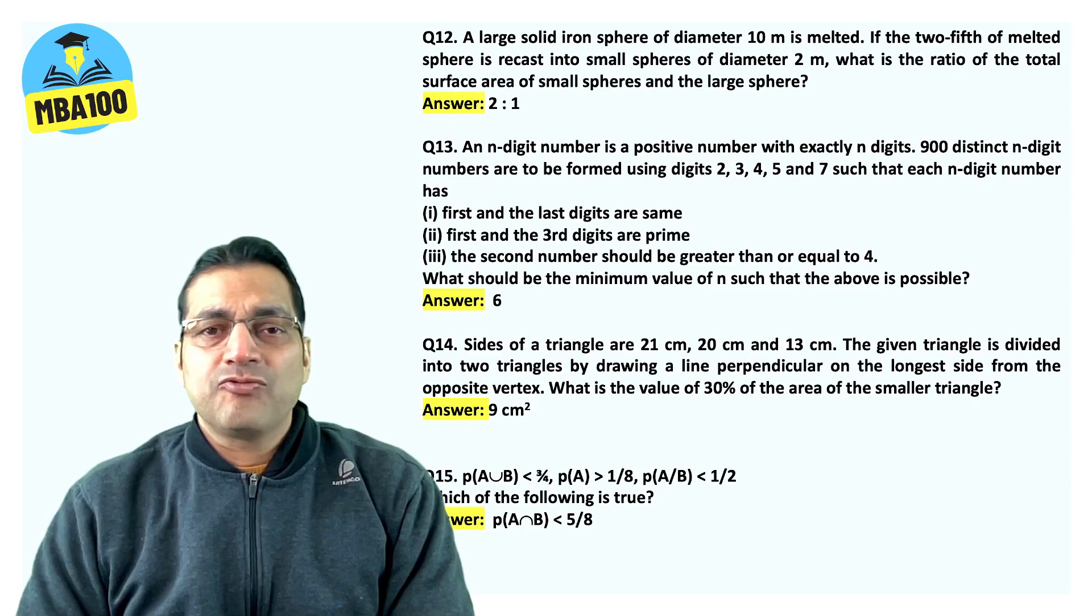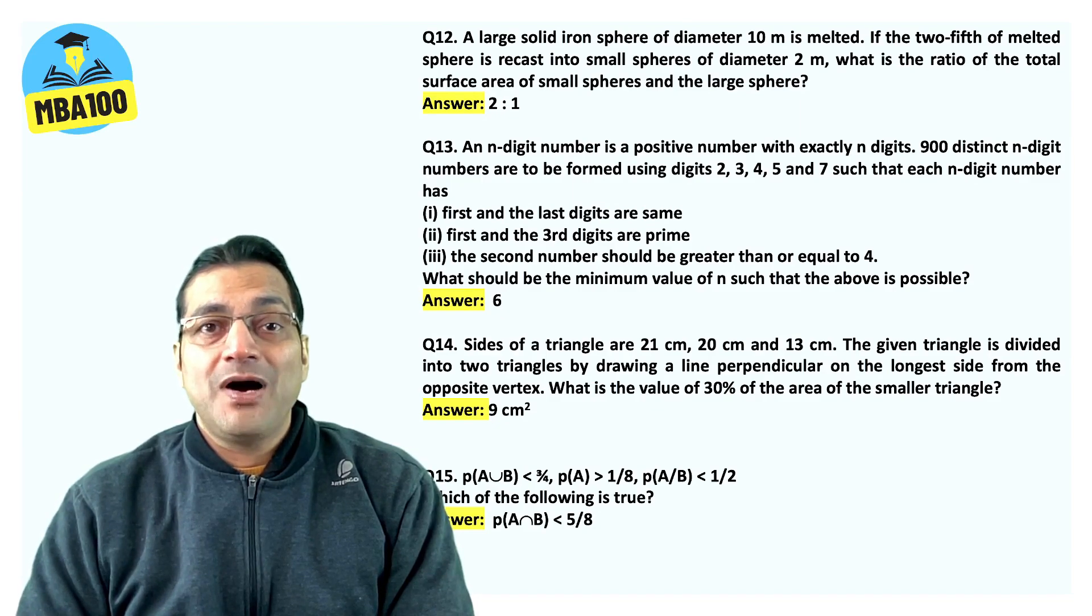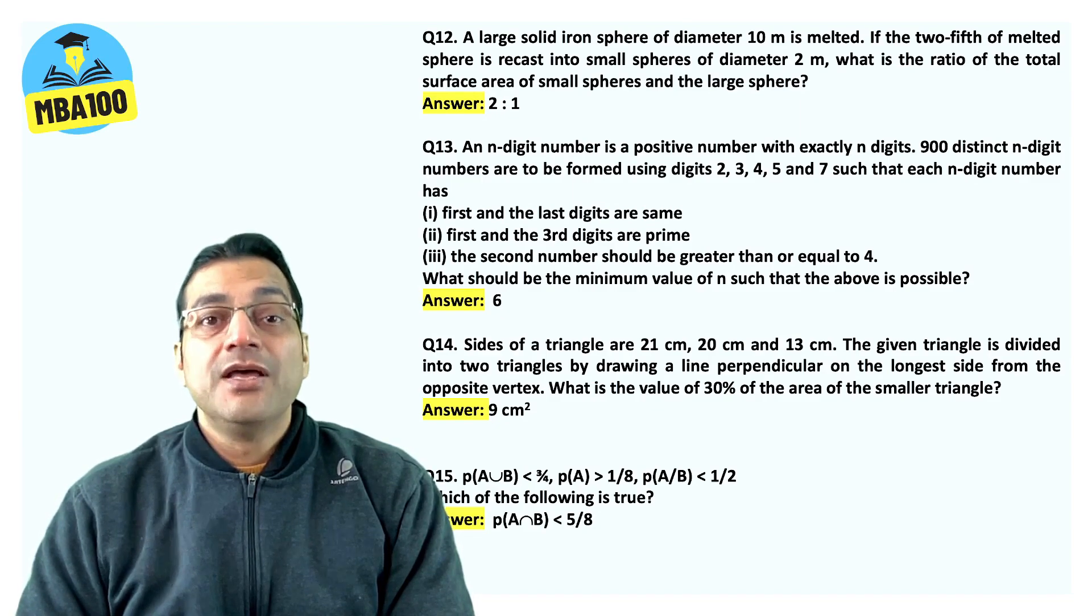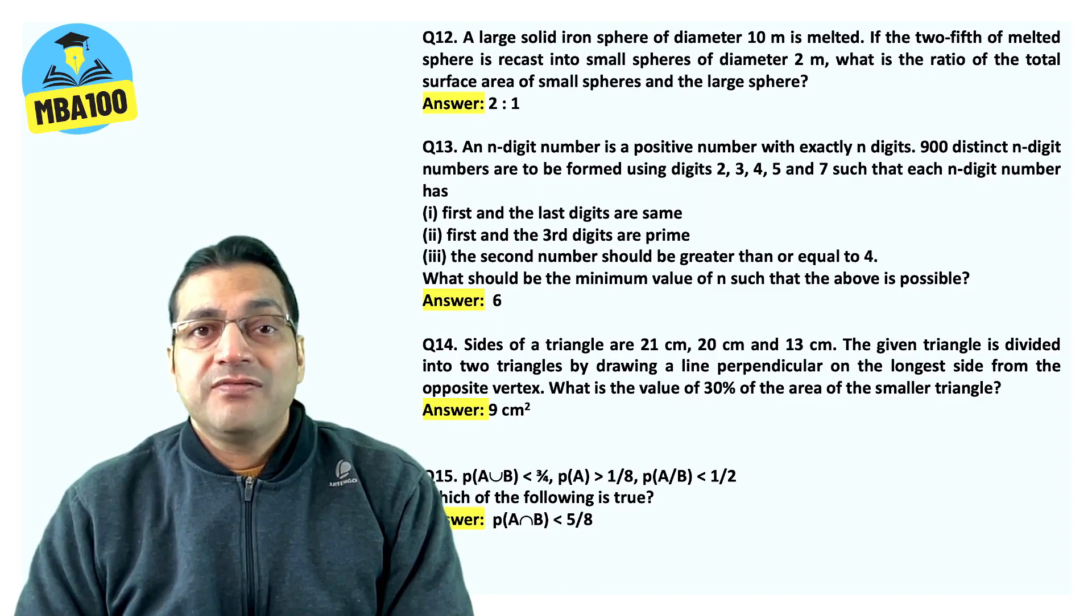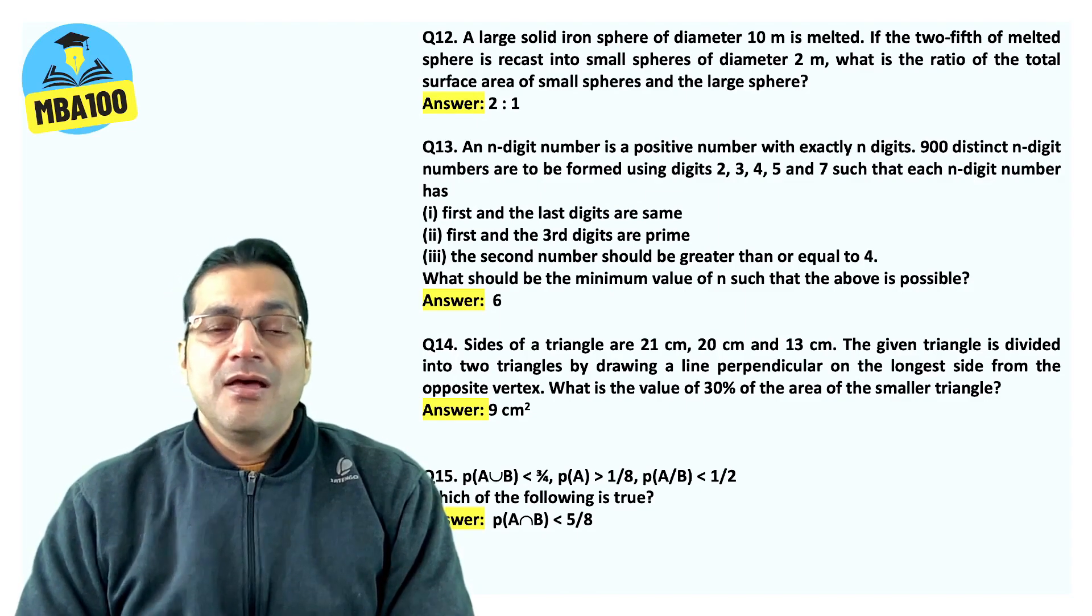Sides of a triangle are 21 centimeter, 20 centimeter. I'm sure you can recall the question. The answer is nine square centimeter. Hope not many people have mapped 30 square centimeter as the answer. You were supposed to get 30% of the smaller triangle.